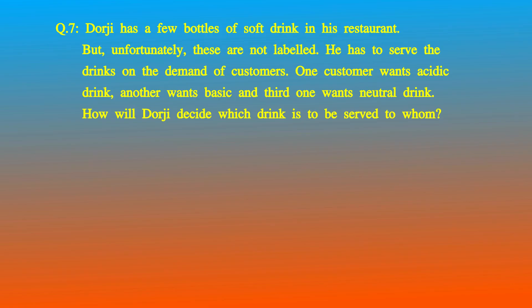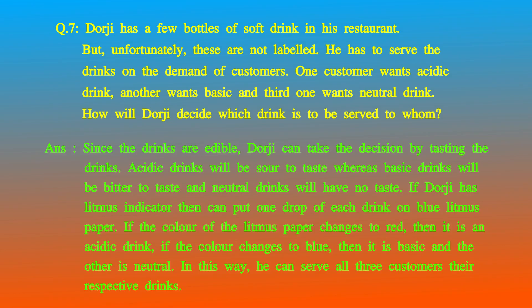Question 7: Dorji has a few bottles of soft drinks in his restaurant but unfortunately these are not labeled. One customer wants an acidic drink, another wants a basic drink, and a third wants a neutral drink. How will Dorji decide? Since the drinks are edible, Dorji can taste them. Acidic drinks will be sour, basic drinks will be bitter, and neutral drinks will have no taste. If Dorji has litmus indicator, he should put one drop of each drink on blue litmus paper. If color changes to red, it is acidic. Then put remaining drinks on red litmus paper — if color changes to blue it is basic, and the others are neutral.